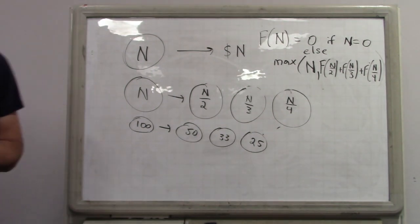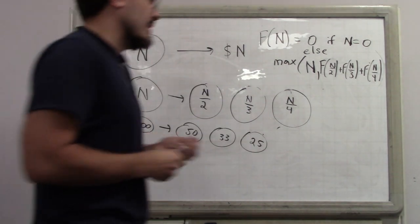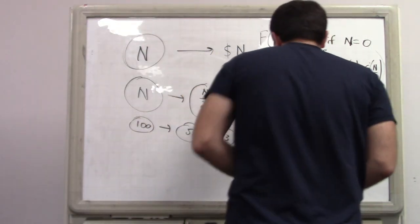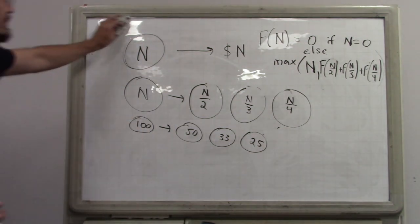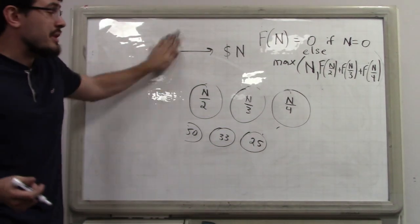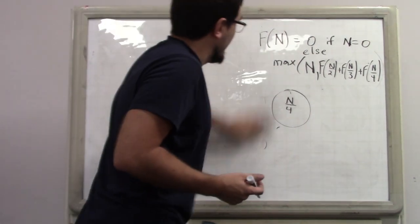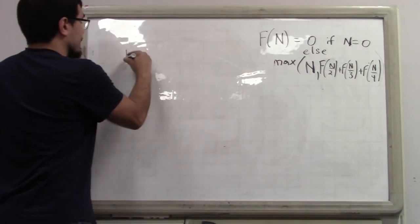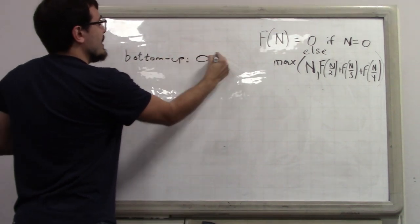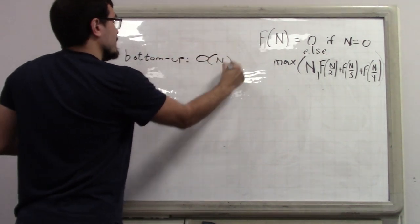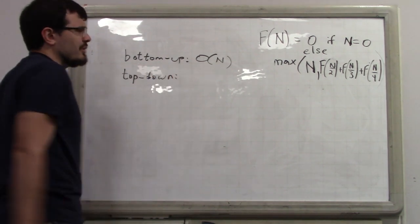Bottom-up, the time complexity is order N. Now what do you think the time complexity of the top-down solution is? Is it order N? It's actually the square of the logarithm — log²(n). This notation means the square is on the log and not on n itself, so it's (log n)², which is not the same as log(n²) — that would just be 2 log n.